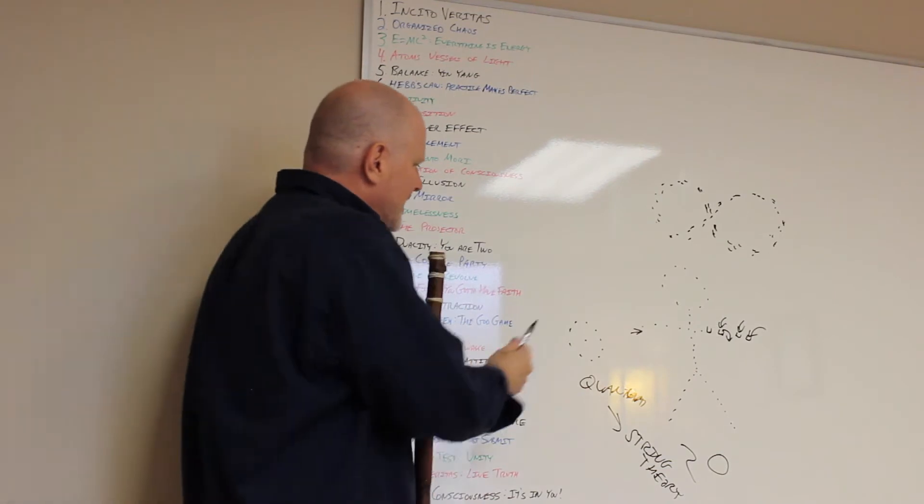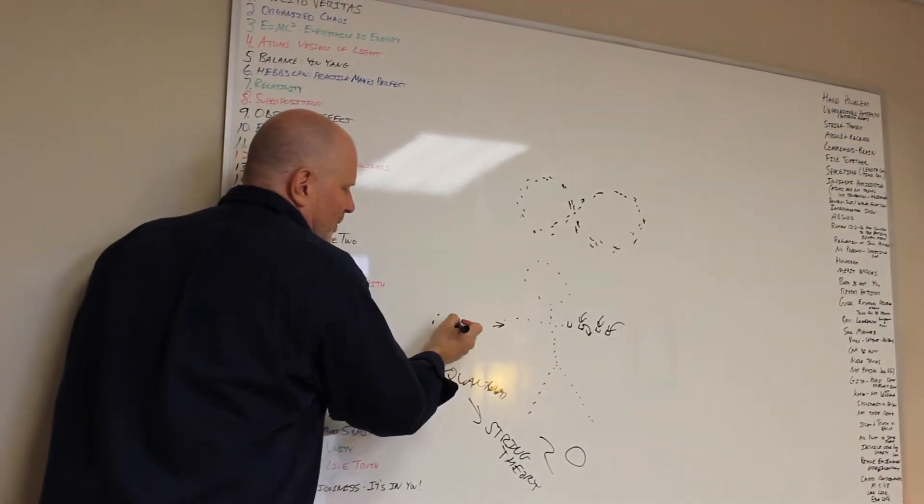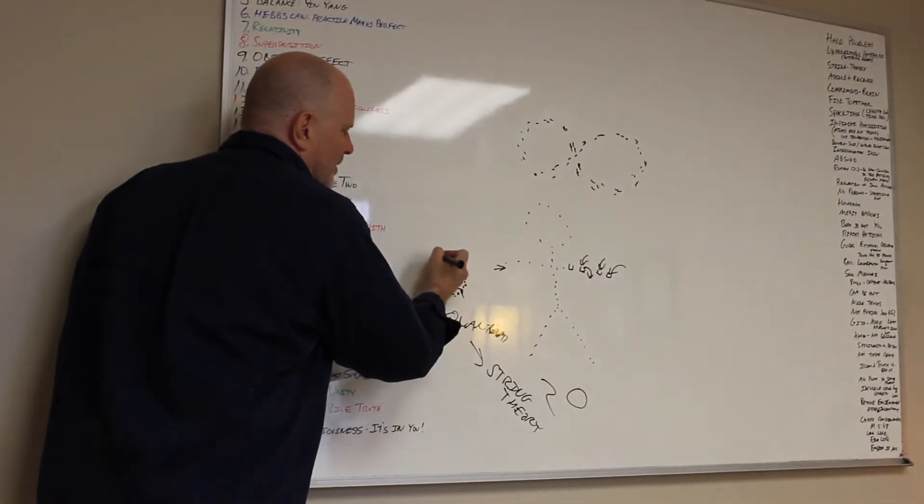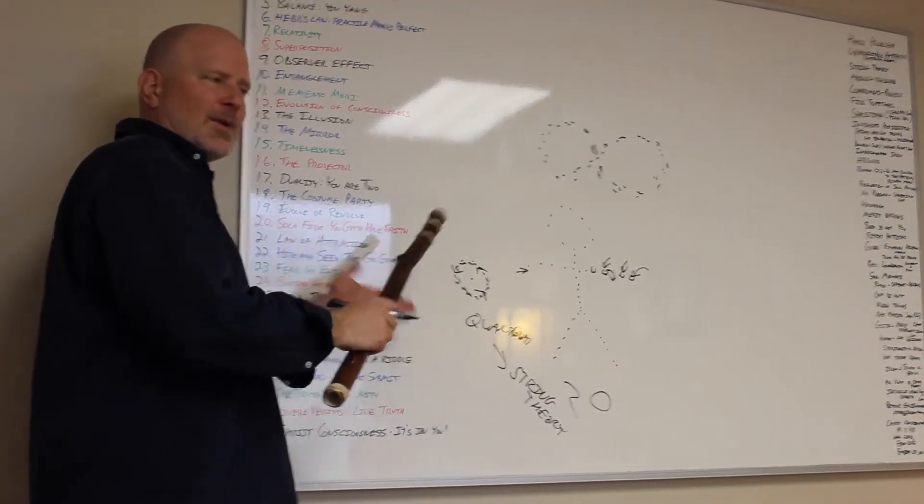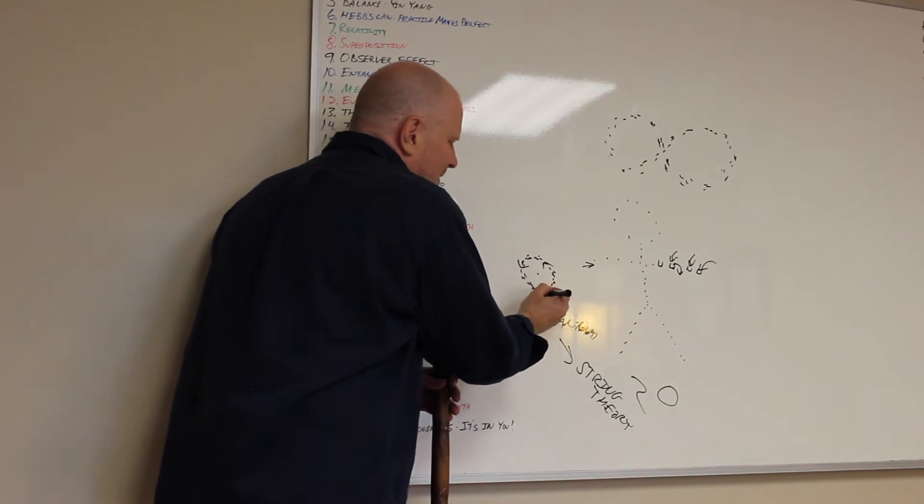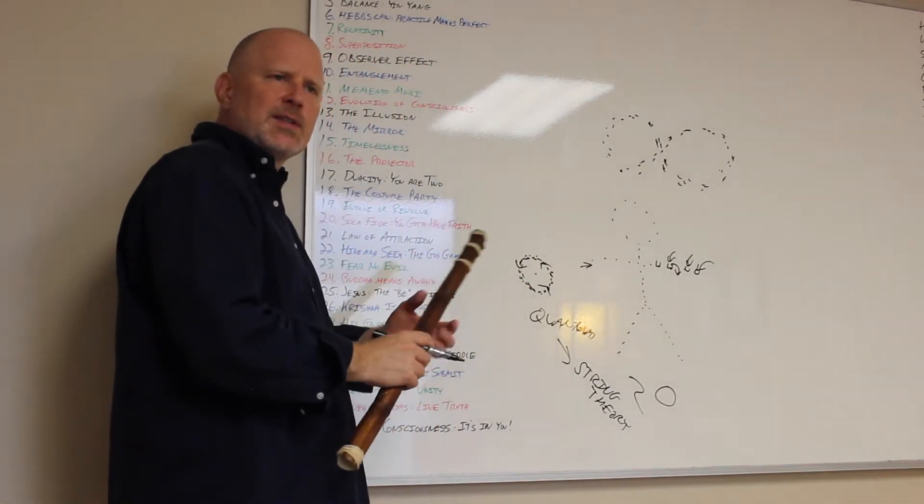Superposition. Now, these atoms again, we get taught that atoms revolve or orbit somehow around the nucleus. Scientists found out about 100 years ago that's not what's happening. The electron is actually in every one of those spots. There's just a certain probability that it's going to show up in any one of those particular spots.